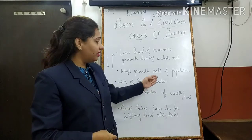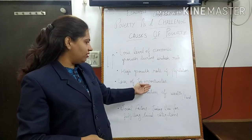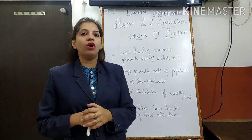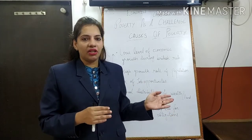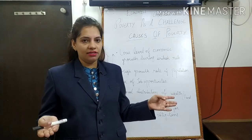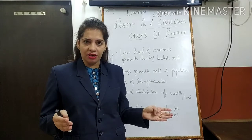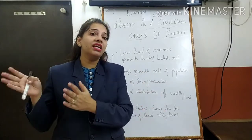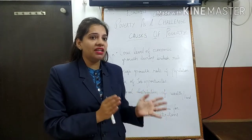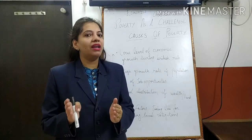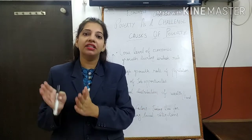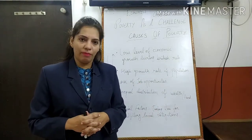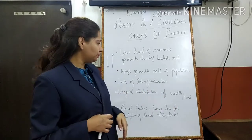This leads to the third cause: lack of job opportunities. When there are more people and poor economic growth, people do not get enough job opportunities — especially in agriculture. Our country is an agrarian economy where more than half the people are engaged in agriculture directly or indirectly. Though the Green Revolution brought certain developments, it is not enough to support such a large population. So many people face unemployment, which is another burning issue and a clear reason for poverty.